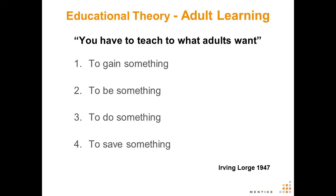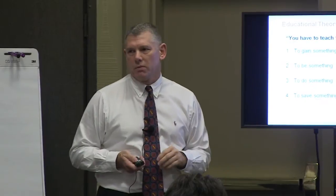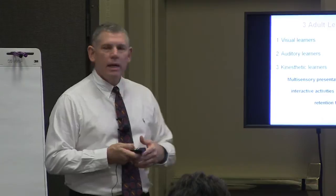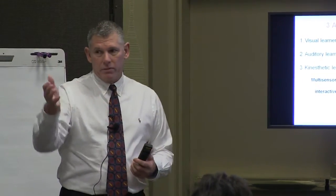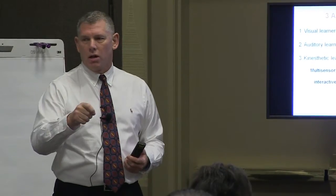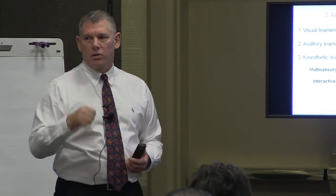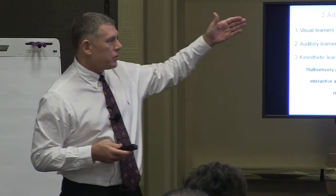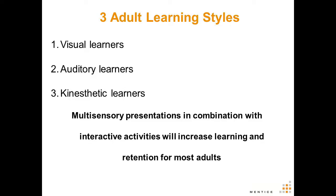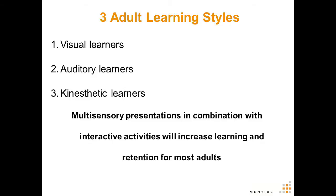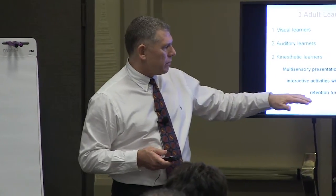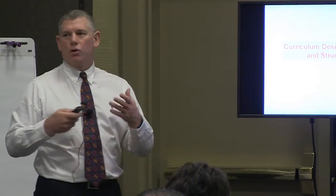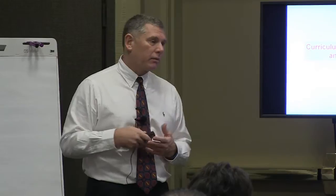Irving Lord in 1947 said if you want to teach an adult learner, it has to gain something, be something, do something, and save something. Adults are multi-sensory learners — visual, auditory, kinesthetic — and a combination of interactive activities will increase learning and retention. As you develop curriculum, remember that what's in the binder was not there seven years ago; it took many successes and failures to get here.